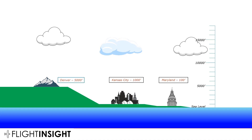We already know that aircraft will perform differently at all three locations because of the altitude differences. Our aircraft is at 5,000 feet MSL — that's true altitude. It would be great to say my aircraft will perform the way it does in Denver, also at 5,000 feet. But we know there are other things that affect performance besides just our true altitude. Air pressure is one big thing that affects performance.